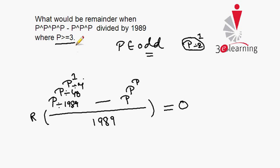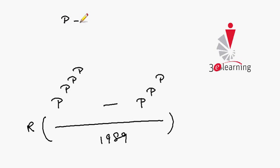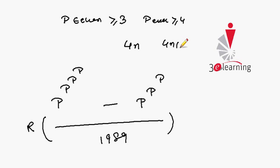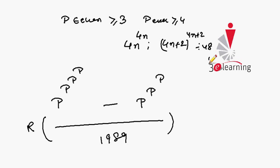Now check what happens if p is even, given that p is greater than or equal to 3. So p is even and greater than or equal to 4. Any even number is either 4n or 4n+2. Since p is greater than 4, the power here is also 4n or 4n+2. For any even raised to power even where both evens are greater than 4, when divided by 48 we always get a remainder of 16. By the Chinese Remainder Theorem, any even raised to even power greater than 4 gives remainder 16 when divided by 48.